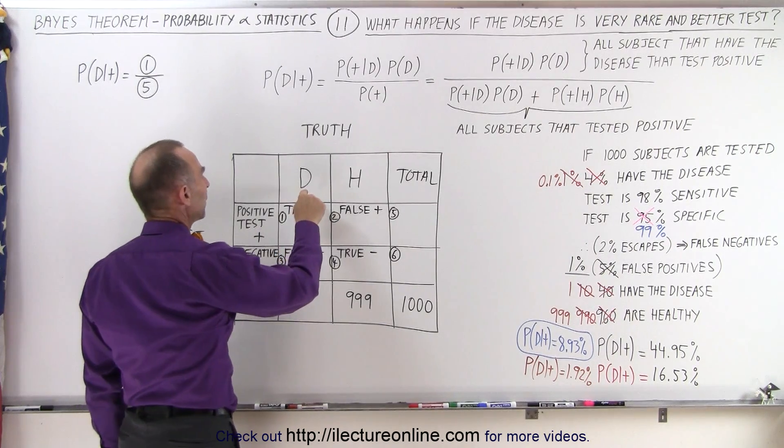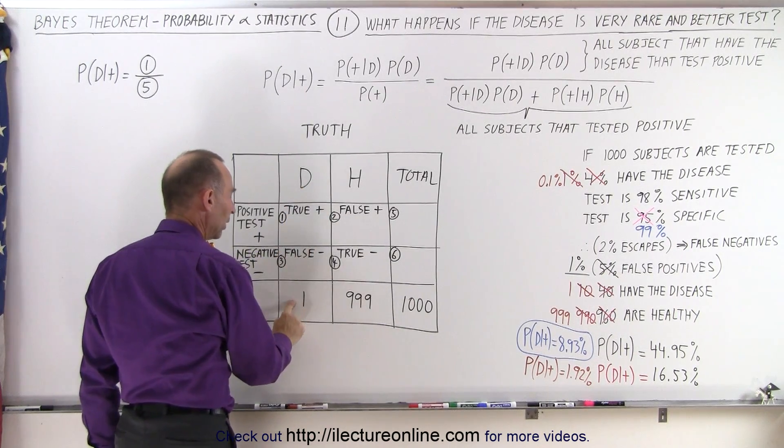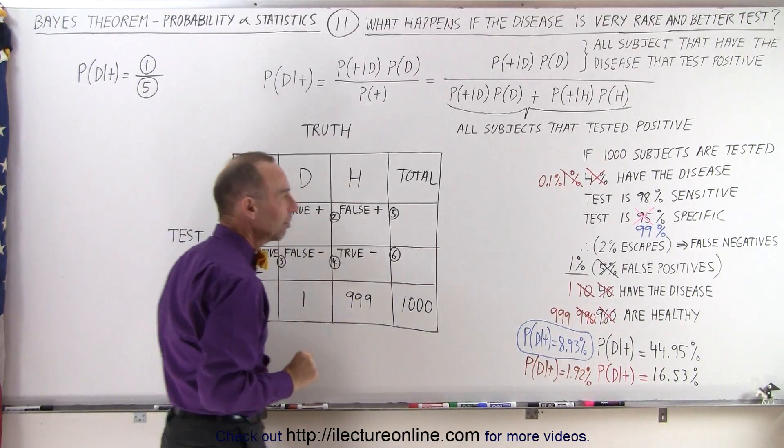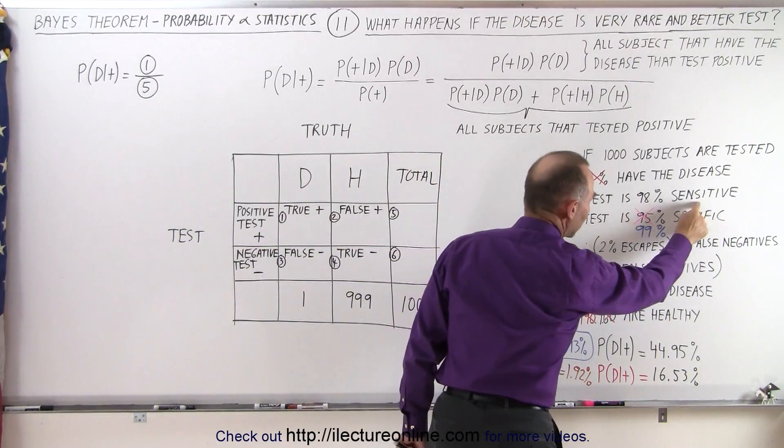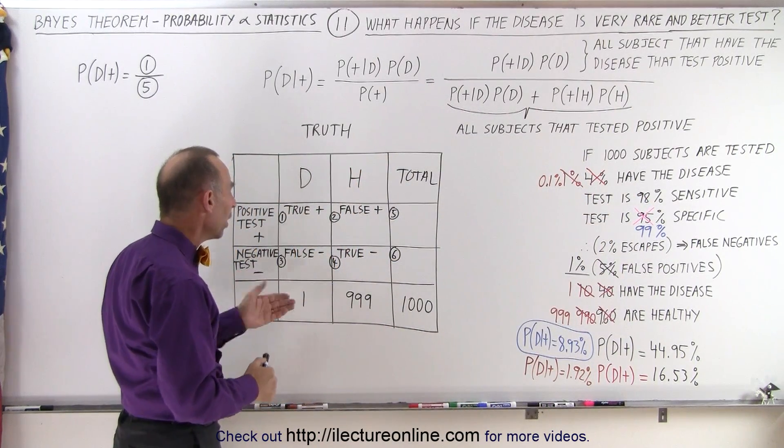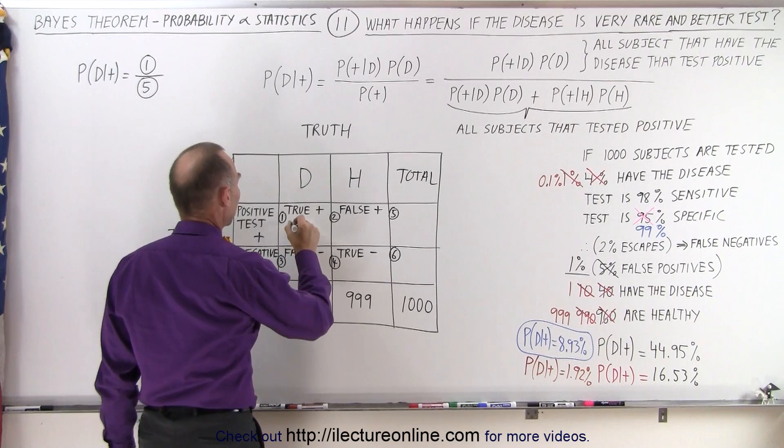So first of all, for those people that have the disease, it'll be 1 out of a thousand. What's the probability that they'll test positive? Well, that depends on the sensitivity: 98%. So 98% of 1 is 0.98.